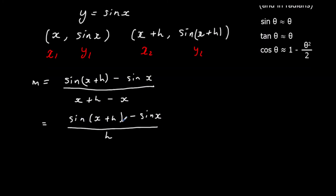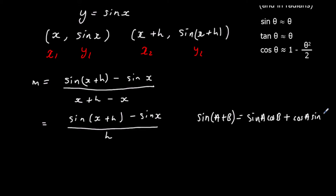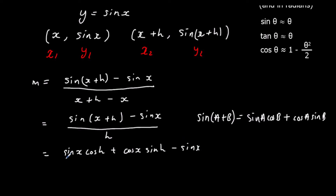So we've got sine(x+h) in the numerator, and we're going to expand that using our addition formula for sine(a+b). Sine(a+b) is sine(a)cos(b) plus cos(a)sine(b). So sine(x+h) becomes sine(x)cos(h) plus cos(x)sine(h), and we've got minus sine(x), all over h.